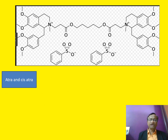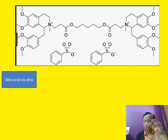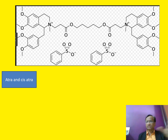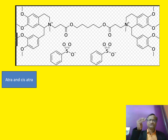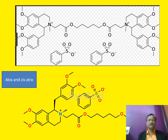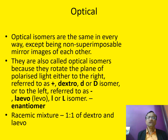For example, atracurium and cis-atracurium demonstrate cis-trans isomerism. Atracurium is not typically a single trans form — it consists of 10 isomers, of which cis-atracurium is one. That is what we should remember.